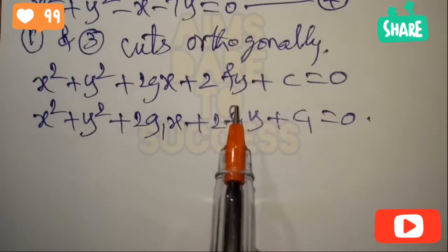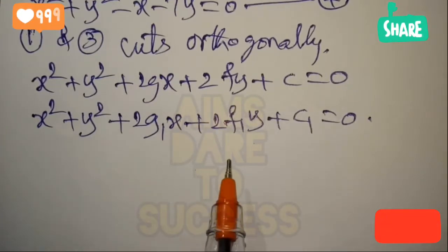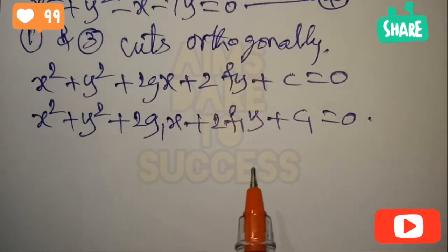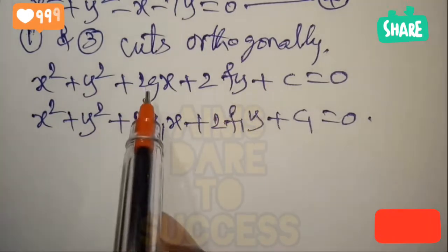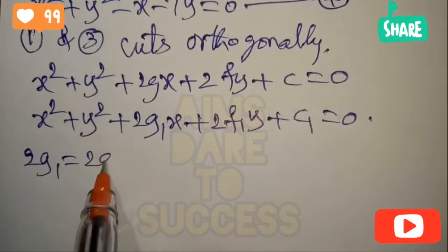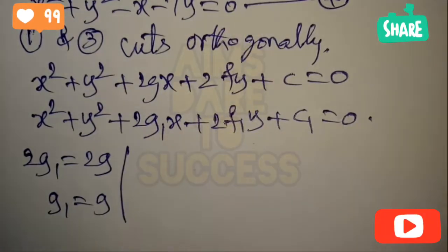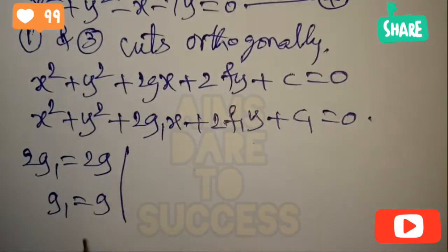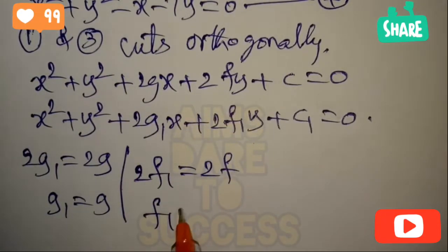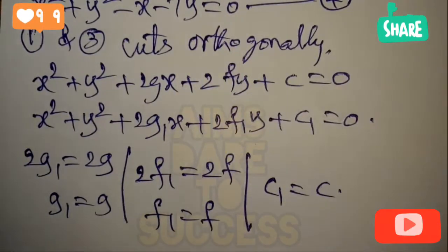Comparing x-coefficients: 2g₁ = 2g, so g₁ = g. Comparing y-coefficients: 2f₁ = 2f, so f₁ = f. And comparing constant terms: c₁ = c.